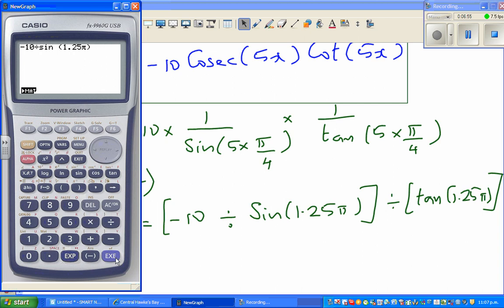Minus 10 divided by sine 1.25 π, close the bracket, which is 14.14, and again divide by tan 1.25 π, and the answer is confirmed.